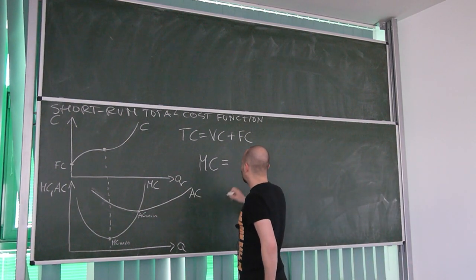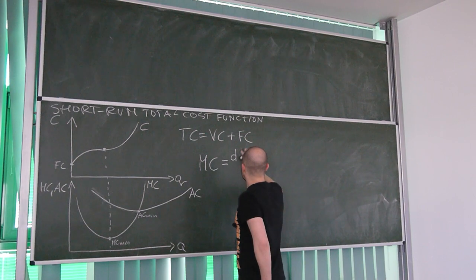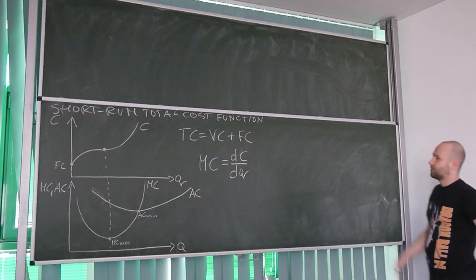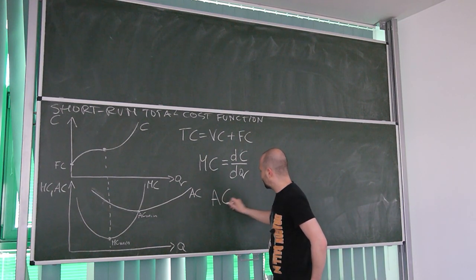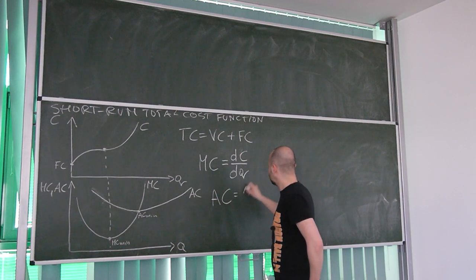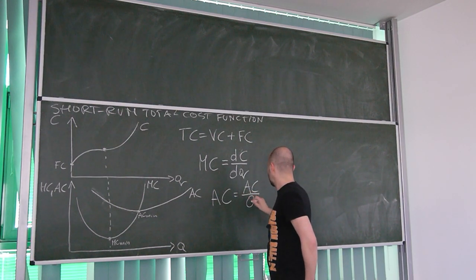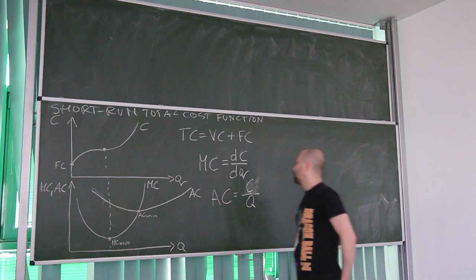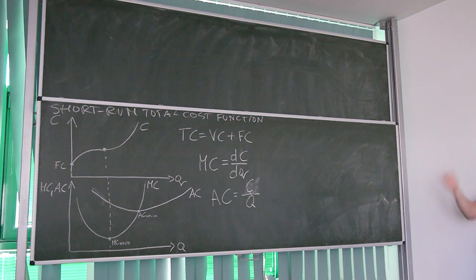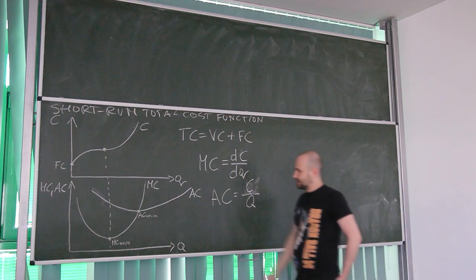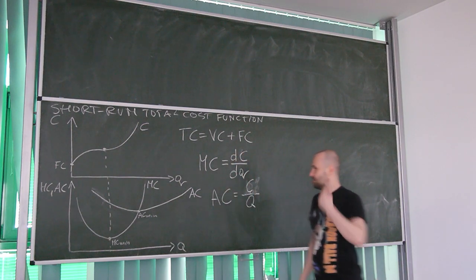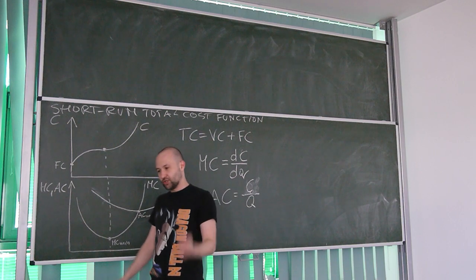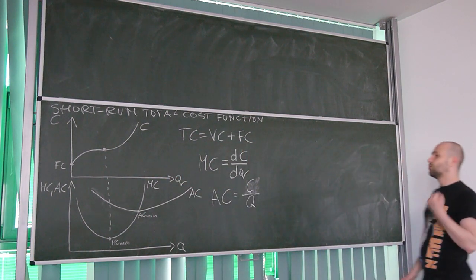In strictly mathematical terms, we can write marginal cost as the first derivative of total cost with respect to quantity — the level of production. Another category that interests us is average cost, which is the cost of production per one unit. You also learned during microeconomics class that average cost takes its lowest value — its minimum — at the point where it intersects with marginal cost.